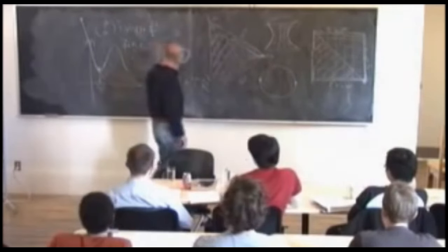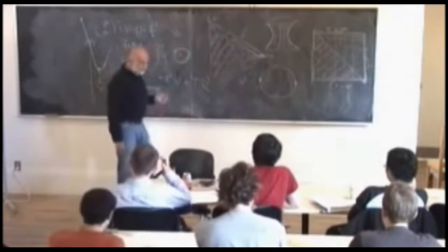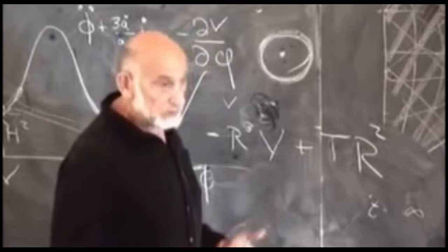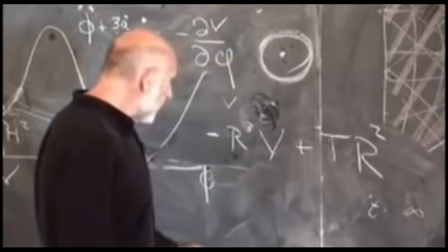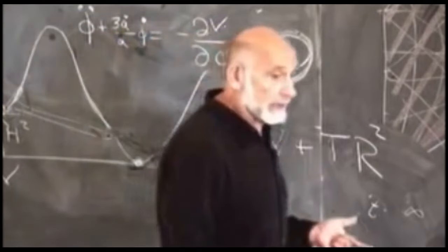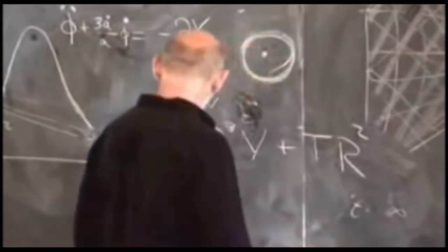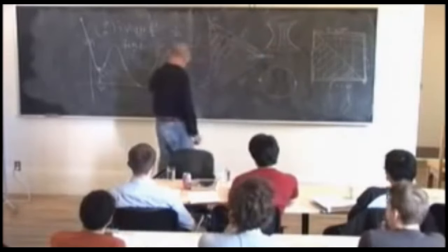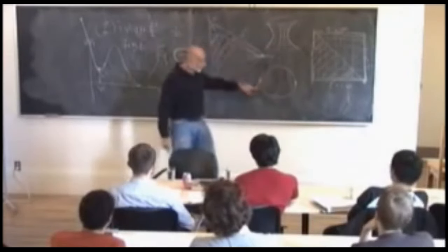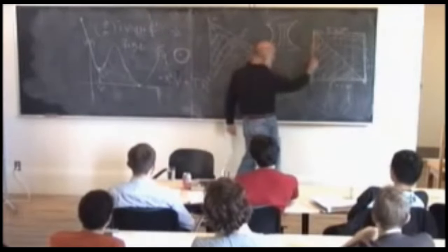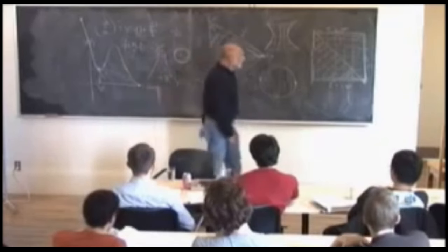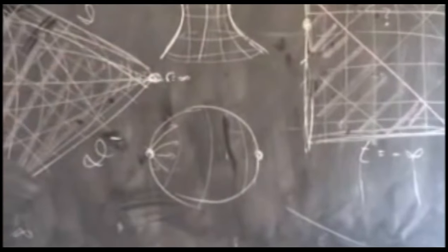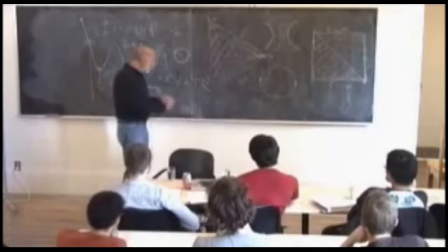Now we come to the question of what this process looks like in spacetime. The nucleation event — the center of the critical bubble — is located at some point of space and some point of time. Let's arbitrarily put the center of the bubble at this pole of the sphere, and then the domain wall begins to expand.